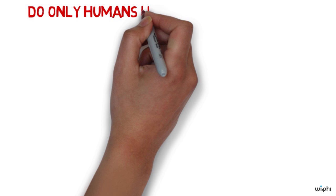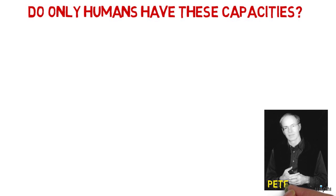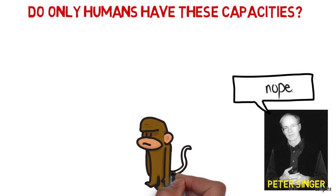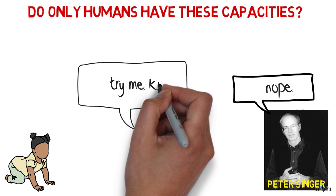But recently, many people have started to question the idea that all and only human beings have these capacities. For example, Peter Singer argues that no matter which capacity we pick, we can always find some non-human animal, like say a chimpanzee, who has that capacity more than some human being, like say an infant or a severely disabled human being.